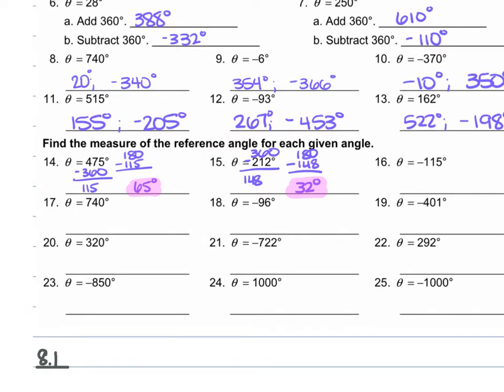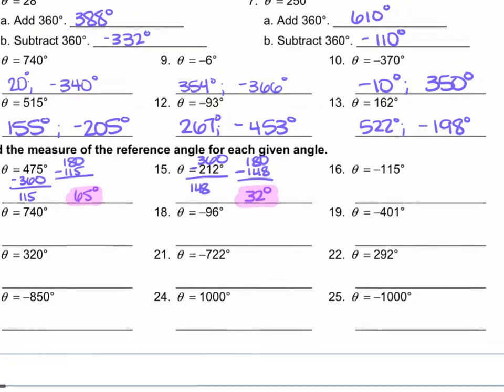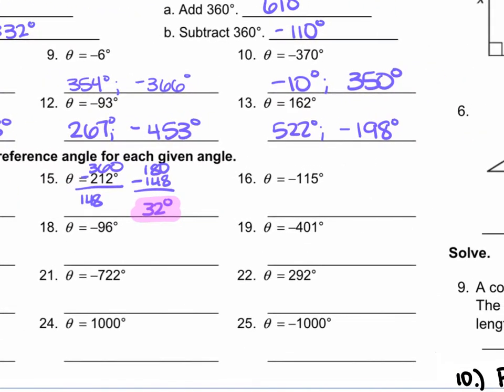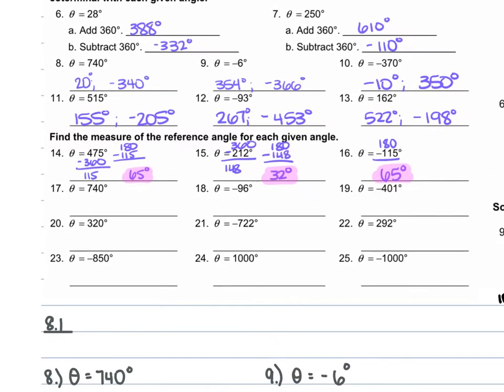For number 16, we're given negative 115 degrees. I'm going to take 180 and subtract 115 from it. When I do that, I get 65 degrees. That's a positive acute angle, so that's my answer.